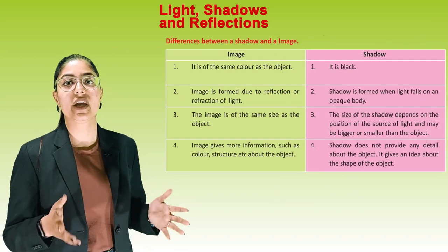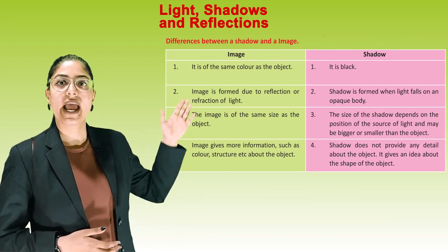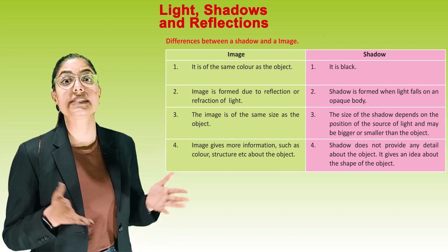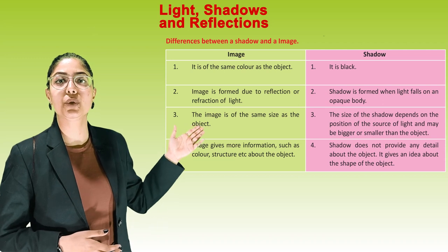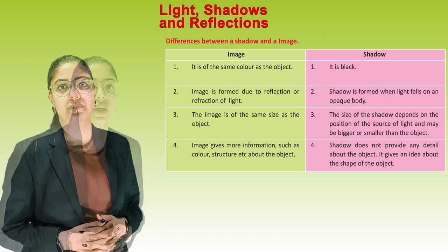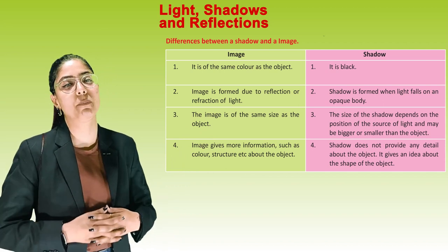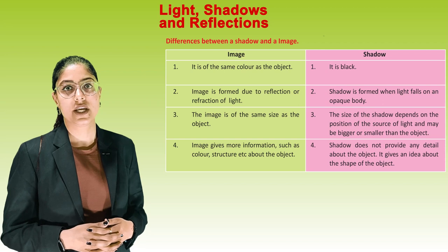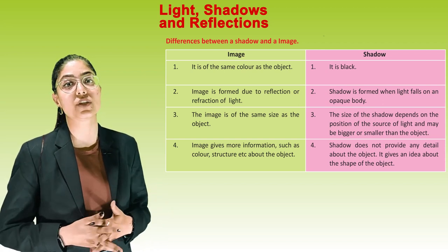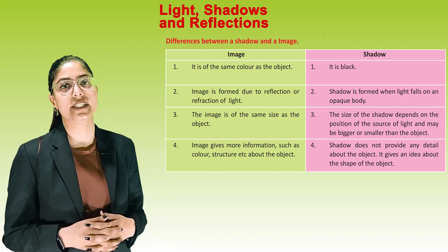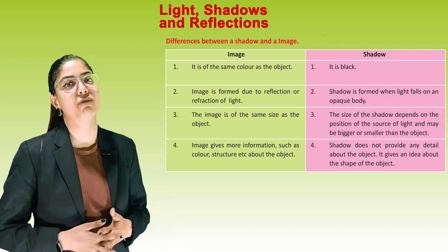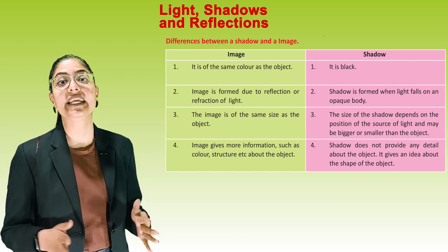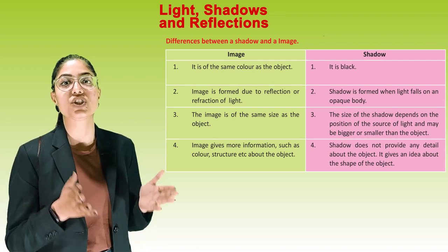Difference between a shadow and an image. See this table. An image is of the same colour as the object, while a shadow is black. An image is formed due to reflection or refraction of light, while a shadow is formed when light falls on an opaque body. The image is of the same size as the object, while the size of a shadow depends on the position of the source of light and may be bigger or smaller than the object. An image gives more information such as colour and structure, while a shadow does not provide any details — it gives only an idea about the shape of the object.